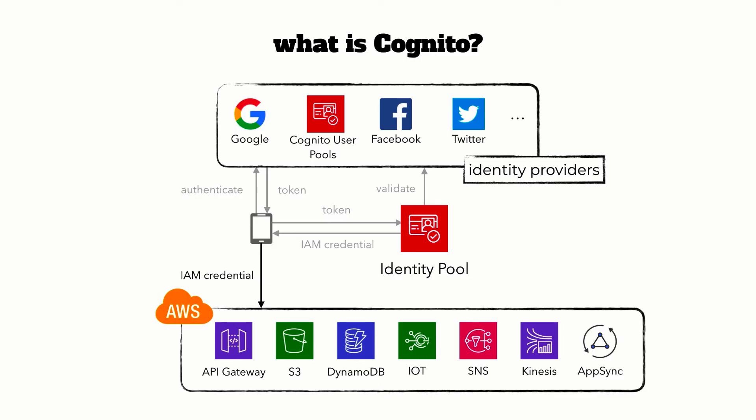This then gives you access to AWS services, including API Gateway endpoints that are protected by AWS IAM authorization, or AppSync, or even talk to S3 or DynamoDB directly from the client. And that's the role of Cognito identity pools: to provide AWS credentials so client applications can access AWS services directly.